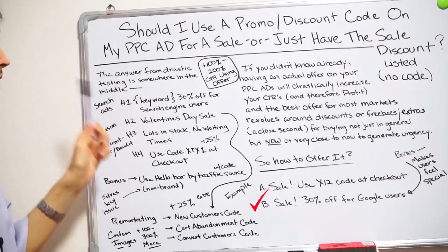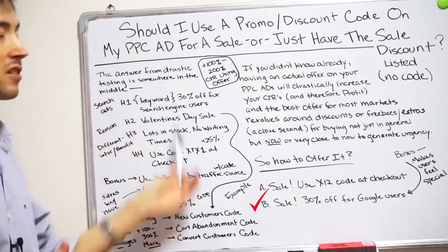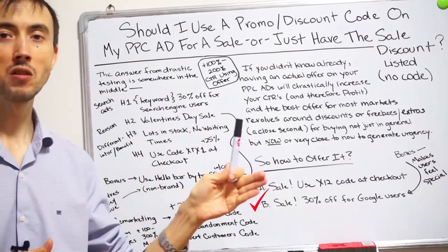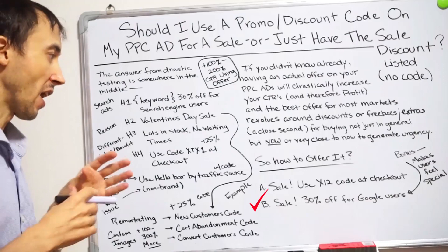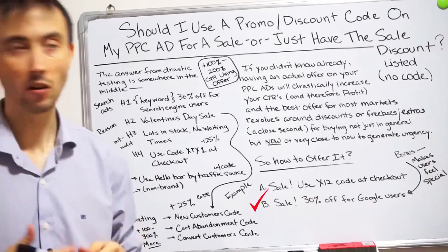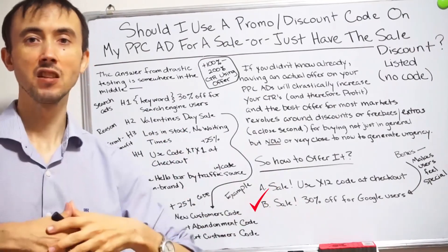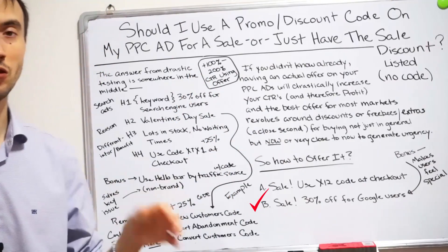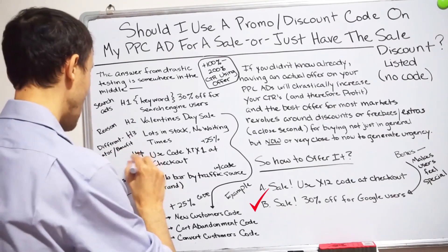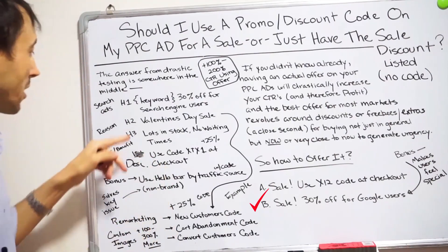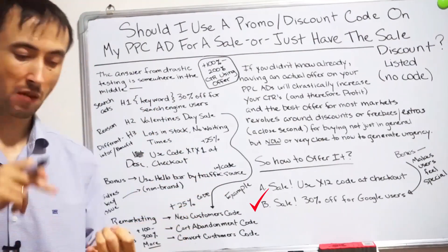The drastic testing I've done indicates this exact model is the way to implement it to get the most out of your ads — making an offer, and using the discount code in the right position. This applies to Google ads, Facebook ads, display ads, or any other advertising platform, not just search engine advertising. With Google ads specifically, if you've seen my other videos, you'll know the strategy involves one keyword per ad group.